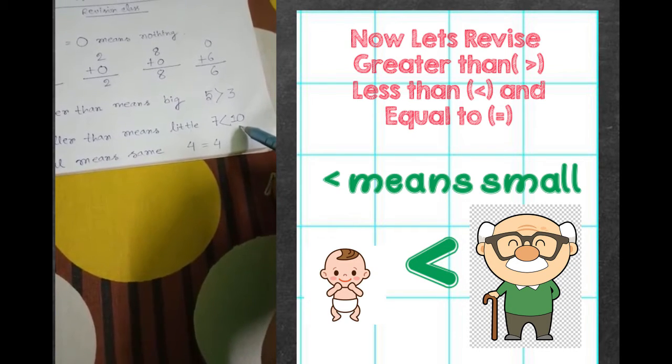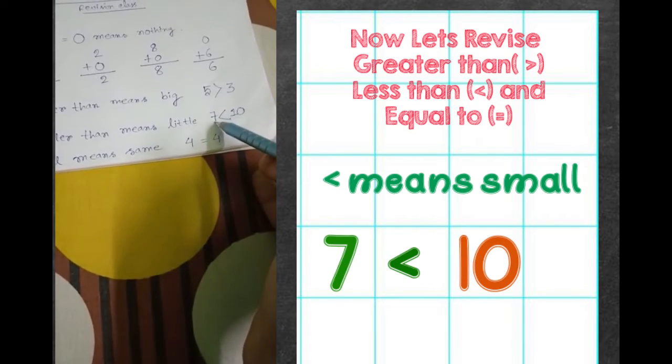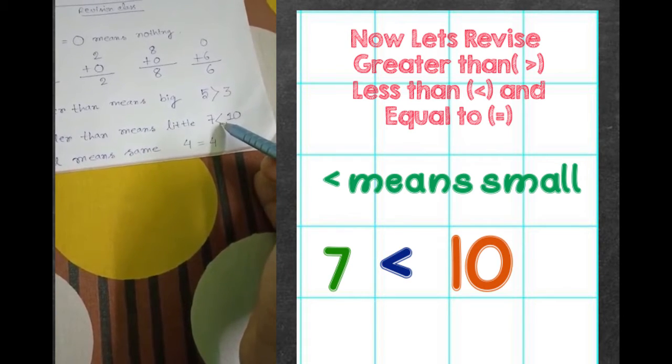So seven and ten, which is smaller? Seven is smaller. So this is the smaller than sign. Okay.